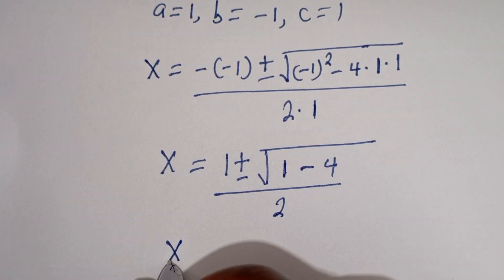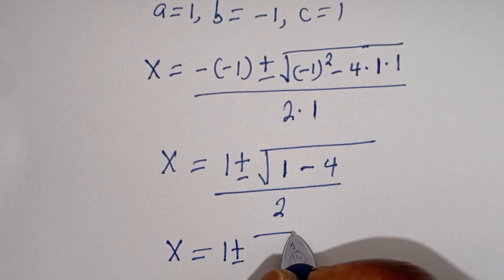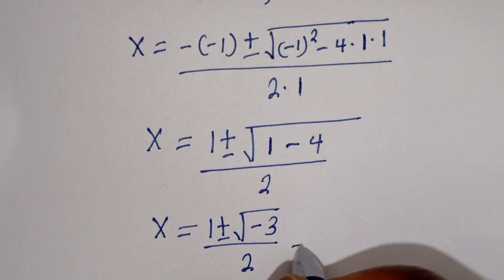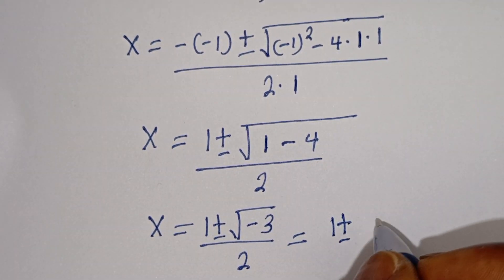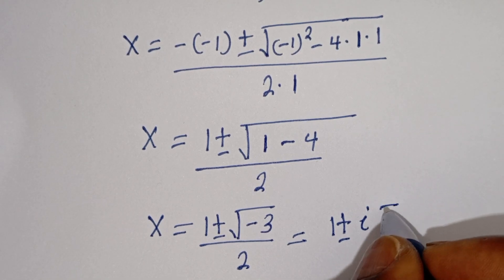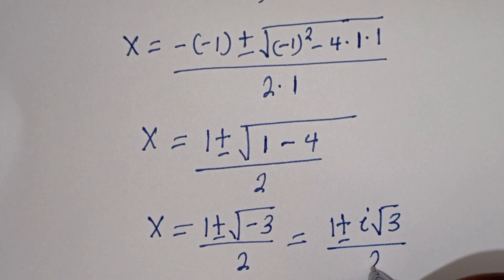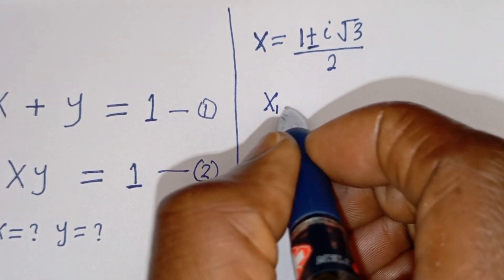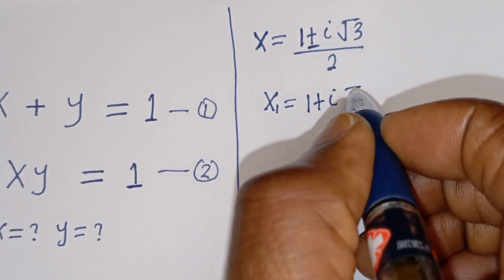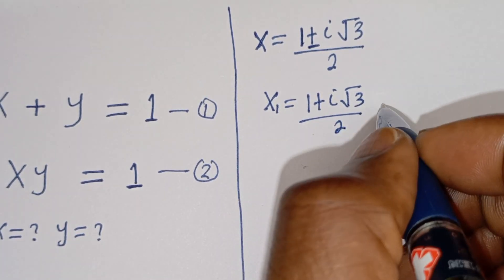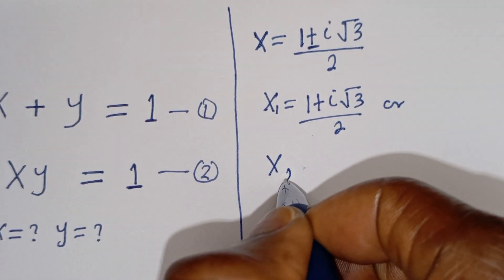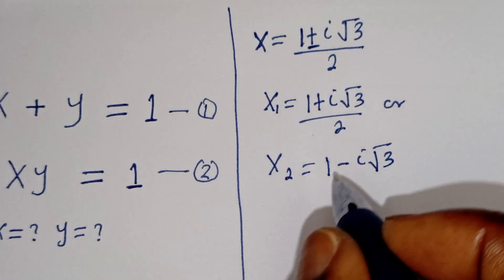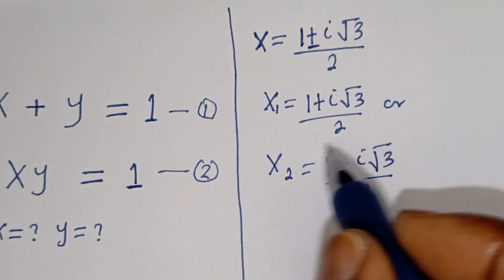Then we have x is equal to 1 plus or minus square root of 1 minus 4, that is minus 3, divided by 2. And this is equal to 1 plus or minus i times square root of 3, divided by 2. Therefore, x1 is equal to 1 plus i root 3 divided by 2, and x2 is equal to 1 minus i root 3 divided by 2. We've gotten the values of x1 and x2.